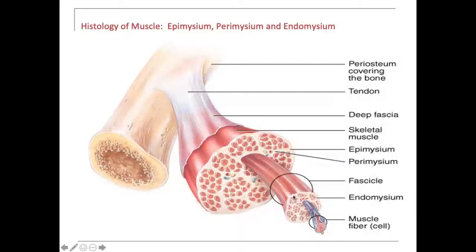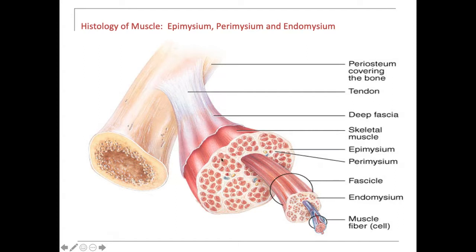At the microscopic level, we have small muscle cells called muscle fibers. What surrounds each muscle fiber is an endomysium. A group of these endomysiums together forms a structure called a fascicle, and the fascicle is surrounded by a perimysium.